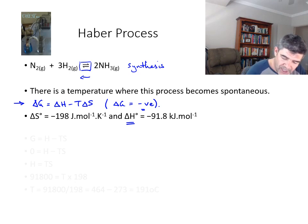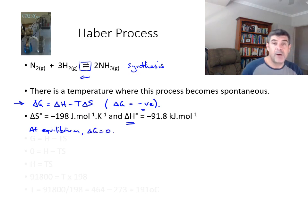So one of the things that we want to look at is the fact that at equilibrium the delta G value is zero. So once we go beyond that point, or at least once we get a value where the delta G is a negative value, then we get a spontaneous reaction.